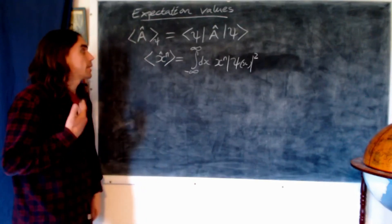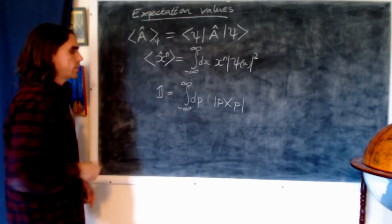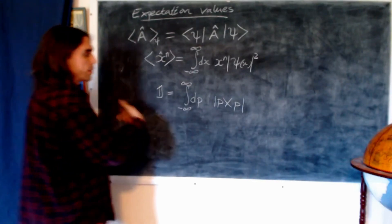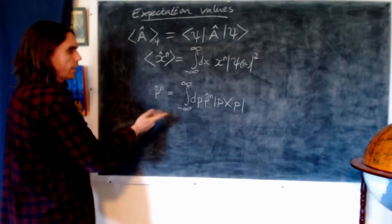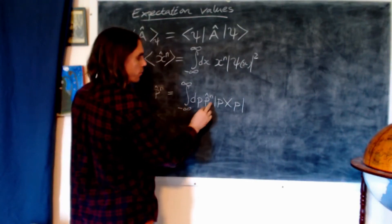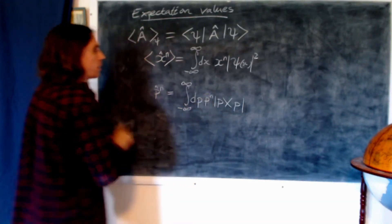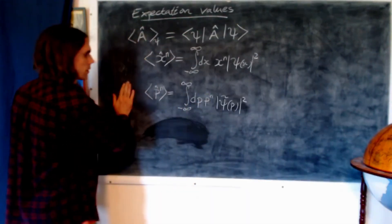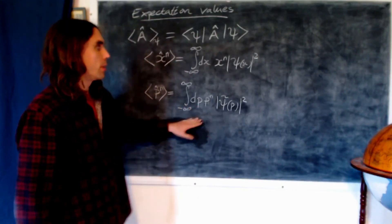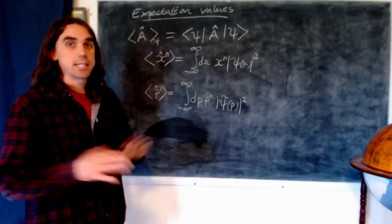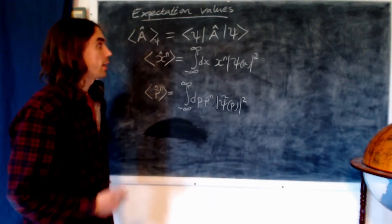To find the expectation value of momentum operators raised to the power n, we do exactly the same thing using the resolution of the identity into momentum states. The momentum operator acting on the momentum eigenstate gives the momentum eigenvalue. Sandwiching between states psi, we arrive at the same expression, but everything written in terms of momentum rather than position — reflecting the symmetry between position and momentum in quantum mechanics.